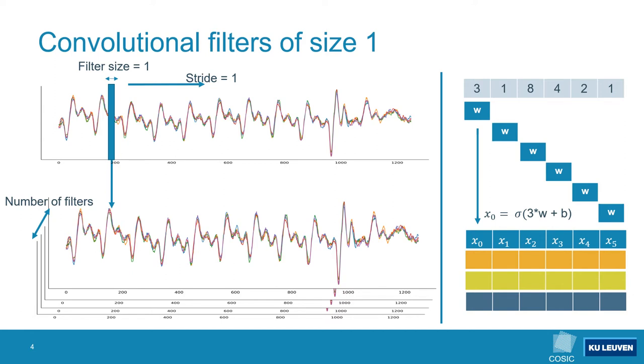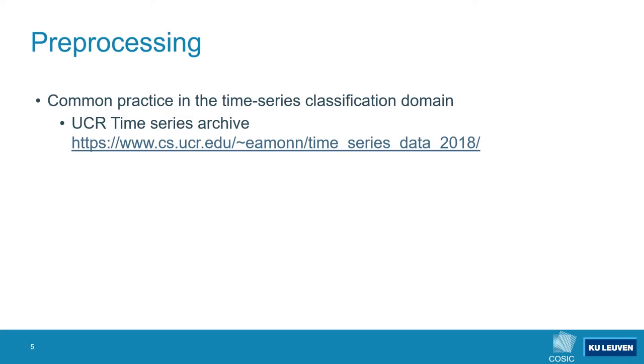Therefore, we conjecture that this first layer can be omitted by properly preprocessing the input data, a technique which is commonly used in the time series classification domain. Filters of size 1, as used in the proposed architecture, could be considered network internal preprocessing units — the filters are learning to scale the input into a range that makes it easier for the network to converge. Looking at the time series classification domain, we could not find many works on network internal preprocessing units. However, it is common practice to preprocess the input data. A good introduction to the field of time series classification and an intuitive explanation as to why preprocessing is useful can be found in a paper accompanying the UCR Time Series Classification Archive.